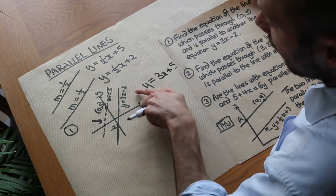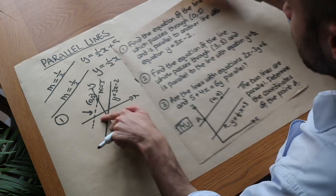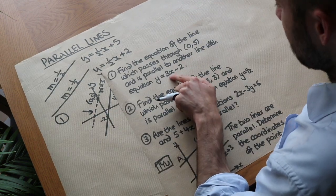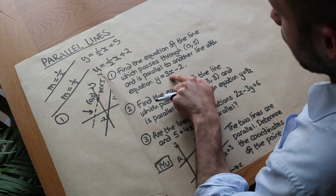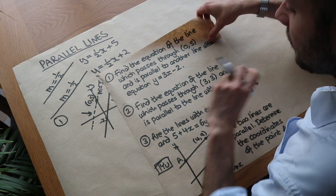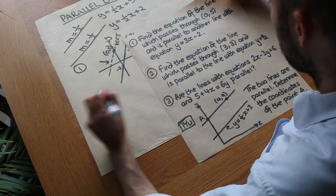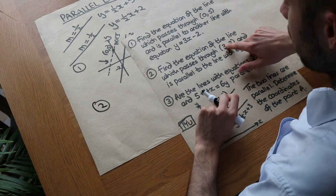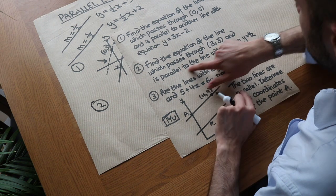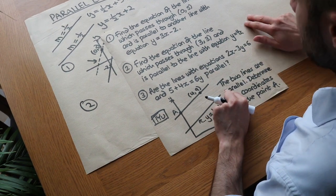Notice that we never actually used the y-intercept of the other line — it's irrelevant. If it's parallel to that line, we know it has the same gradient of 3, but we don't care about the other line's y-intercept. Now for the second example: find the equation of the line which passes through the point (3, 3) and is parallel to the line with equation y equals 4x.